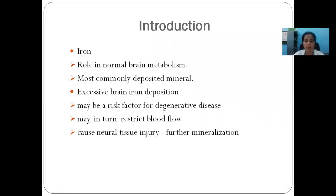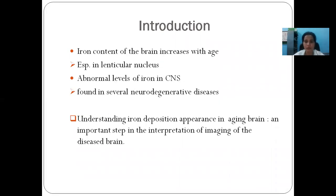Basal ganglia exhibit increased susceptibility to mineralization because of their metabolic rate. Among calcium, iron, copper, zinc, and magnesium, iron is the most commonly deposited mineral. It plays a role in normal brain metabolism, but excessive brain iron deposition causes risk factors for degenerative diseases, leading to restriction of blood flow, neural tissue damage, and hence further mineralization. Normally, brain iron content increases with age, especially in the lenticular nucleus because of its high metabolic activity.